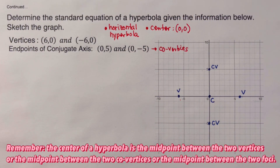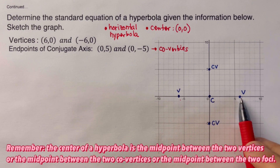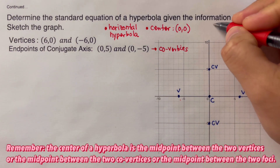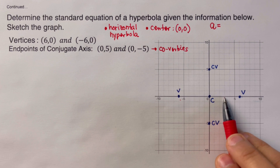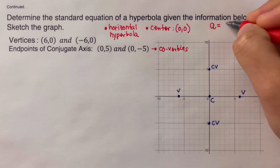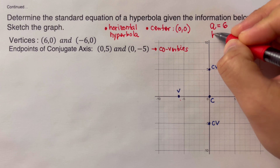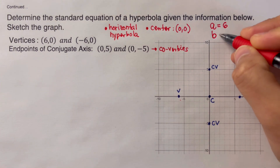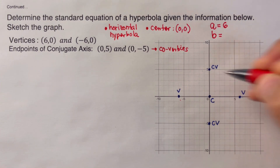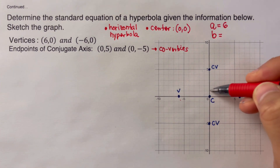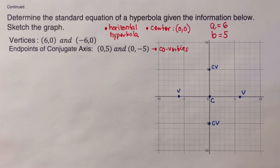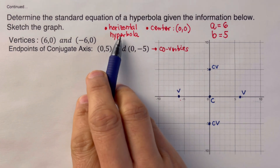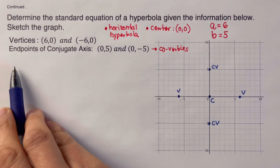We remember that the distance from the center to the vertex is A. Counting, A = 6. The distance from the center to the co-vertex is B. Counting, B = 5. We can now write the general equation of a horizontal hyperbola.